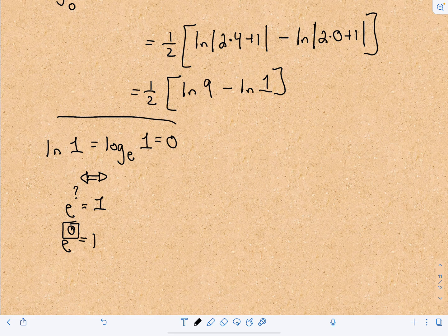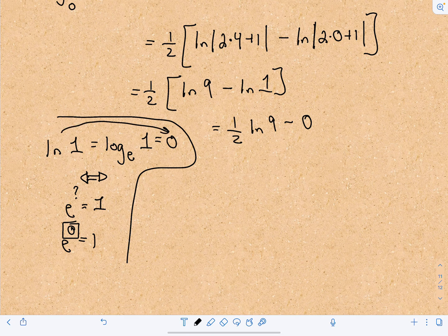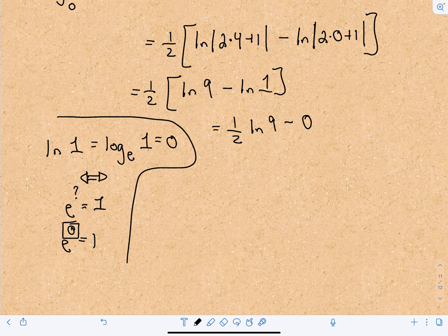Let me rewrite this. This is going to be 1 half the natural logarithm of 9, minus 0 because we just said the natural logarithm of 1 is 0. So we can basically forget this term and just get rid of it.